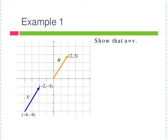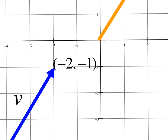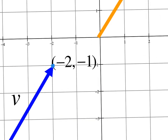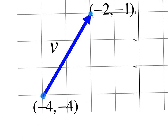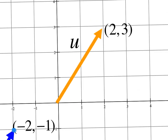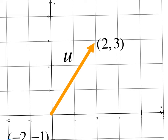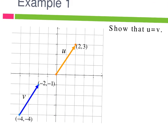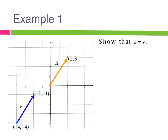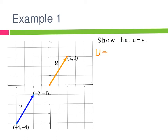This example says show that u equals v, so we're showing these are equivalent vectors. We'll go through the motions of component form and magnitude for each. The component form of u: the initial point is (0, 0), and the terminal point — determined by the arrow's direction — is (2, 3). So the component form of u is ⟨2, 3⟩, calculated as terminal x minus initial x = 2−0, and terminal y minus initial y = 3−0.